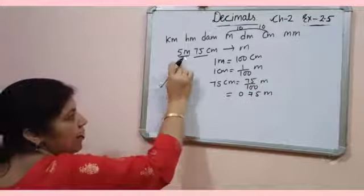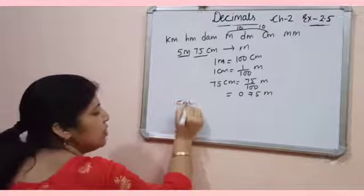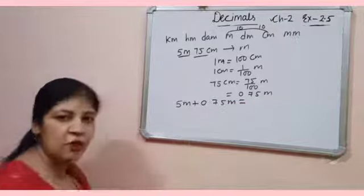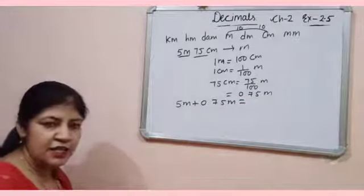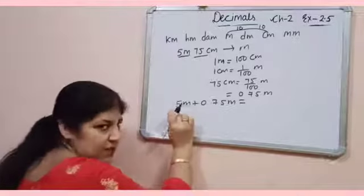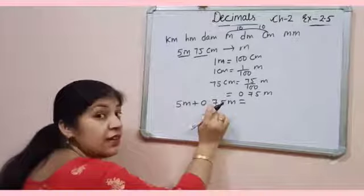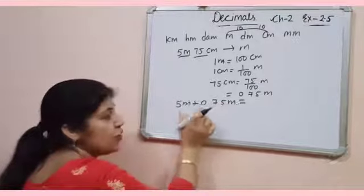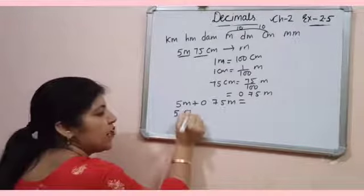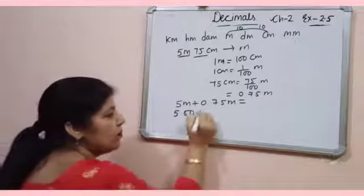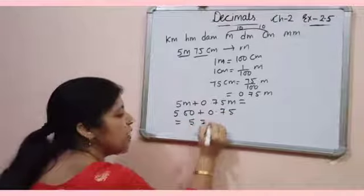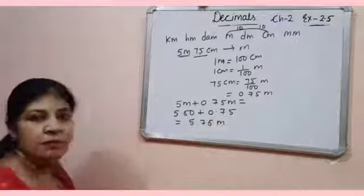Now add 5 meter to it. 5 meter plus 0.75 meter. When you add, always add same place value to the same place value. Like it is at 1's place and it is at 10's place and 100's place. So first you have to make them like decimal. Like 5.00 plus 0.75 then it will be 5.75 meter.